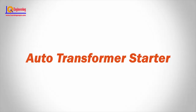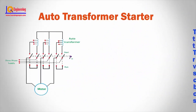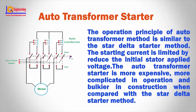Auto transformer starter. An auto transformer starter is suitable for both star and delta connected motors. In this method, the starting current is limited by using a three-phase auto transformer to reduce the initial stator applied voltage. The operation principle of the auto transformer method is similar to the star delta starter method. The auto transformer starter is more expensive, more complicated in operation, and bulkier in construction when compared with the star delta starter method.